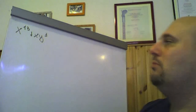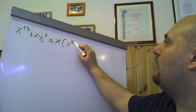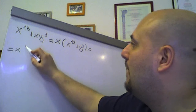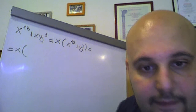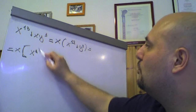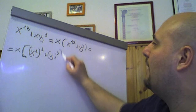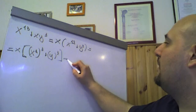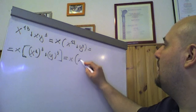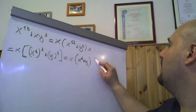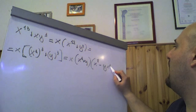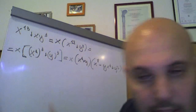x¹³ + xy³. Sicuramente, prima cosa, raccogliamo un x, e diventa x(x¹² + y³). Attenzione adesso: qui non abbiamo una somma di potenze simili, ma possiamo scrivere x¹² come (x⁴)³, così y³ rimane al cubo. Quindi dentro la parentesi quadra abbiamo una somma di cubi, che sappiamo essere pari a (a + b)(a² - ab + b²), dove a vale x⁴, b vale y. Quindi: x · (x⁴ + y) · (x⁸ - x⁴y + y²). Dove (x⁴ + y) non è poi scomponibile, è irriducibile. Eccola, la nostra scomposizione.